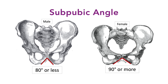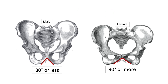Next, the sub-pubic angles differ between the male and female pelvis. The sub-pubic angle is the angle created by the rami of the paired pubis and ischium bones and lies inferior to the pubic symphysis. In males, the angle is acute, less than 80 degrees, and in females, the angle is obtuse, greater than 90 degrees. The obtuse angle of the female sub-pubic angle increases the diameter of the pelvic outlet.